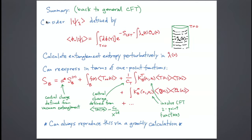Schematically, the expansion of the entanglement entropy for a ball-shaped region looks like: a vacuum contribution, then a first-order term in λ which only involves the one-point function of the stress-energy tensor inside the ball integrated with some weighting function, and then second-order contributions which are quadratic in the one-point function of the stress-energy tensor and the one-point function of any other scalar operator that we've sourced.